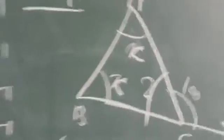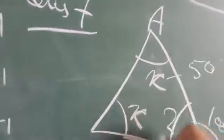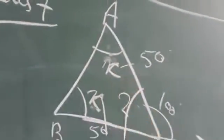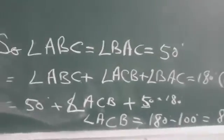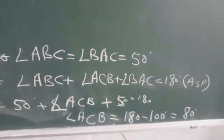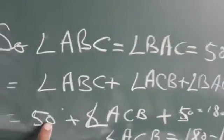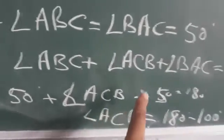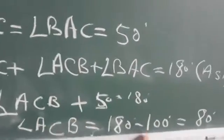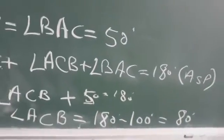अब आपको पता है ये 50 degree आ चुके हैं, ये भी 50 degree आ चुके हैं। तो तीनों angles का sum 180 degree होगा। ABC + ACB + BAC = 180 degree। 50 + angle ACB + 50 = 180, तो 100 जब दूसरी साइड जाएगा minus का हो जाएगा, तो angle ACB = 80 degree।